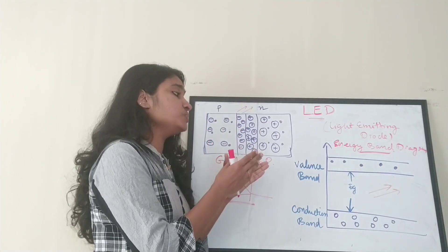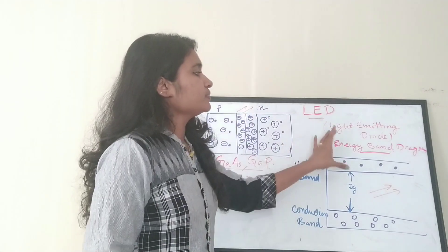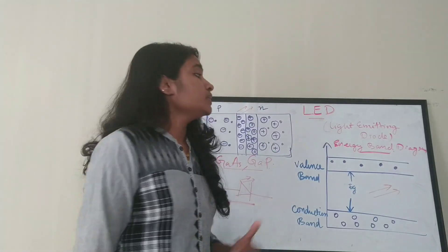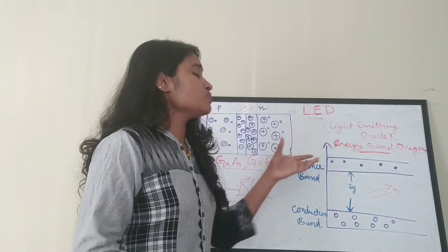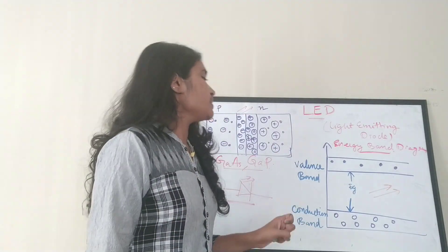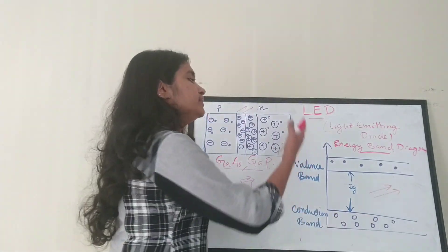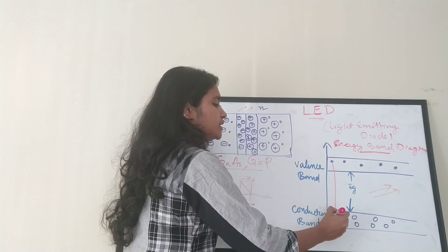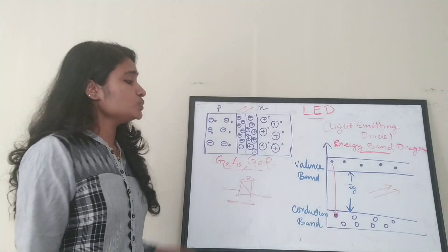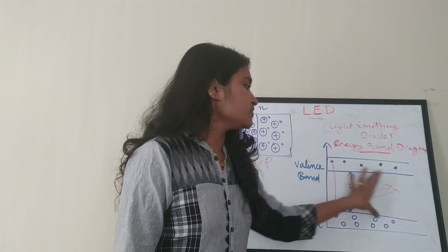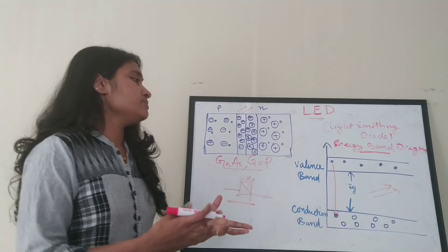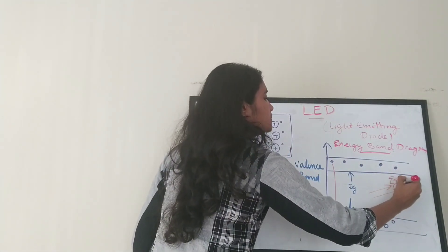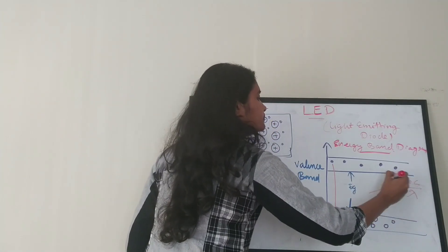When an electron and a hole are recombined, there is a valence band and a conduction band. The valence band consists of plenty of free electrons and the conduction band consists of holes. When recombination takes place, an electron from the valence band recombines with a hole. During this recombination, some amount of energy — according to the energy band gap — is released. This energy is given by Eg = hc/λ.